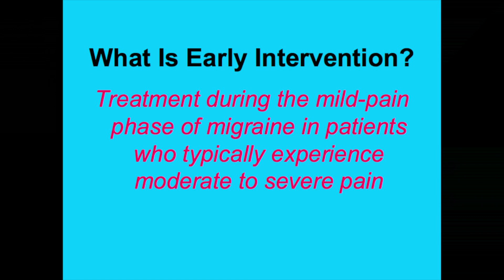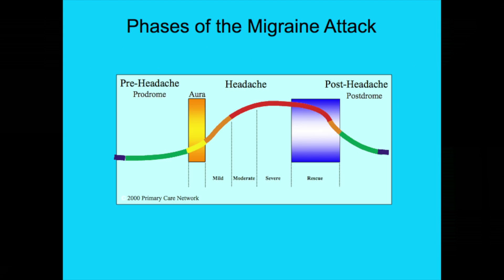Now let's talk about early intervention, which is one of the most important concepts in migraine acute care. This means treating the patient during the mild phase of the migraine in patients who typically experience moderate to severe pain. Looking at the migraine curve, patients sometimes start with prodrome and aura, then go through a mild phase, and if untreated, many will progress to moderate and severe headache, then resolve over time with some postdrome symptoms. We want to catch people in that mild phase because studies show that treating during that phase makes you much more likely to get a complete response.